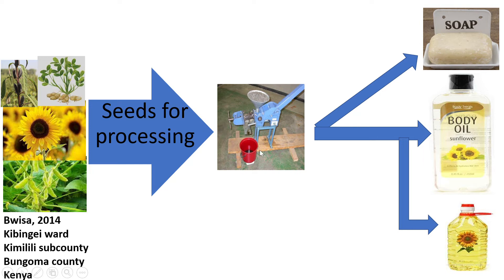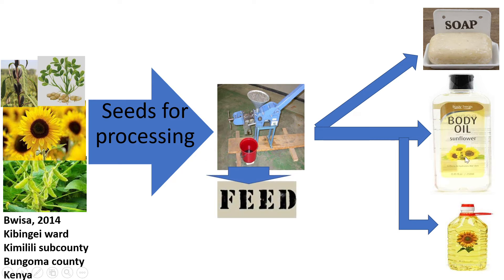When I processed the seeds, I got oil. Some of that oil went on to make soap — bar soap. Some of the oil was used for food. I did not make any body oil, but I am told sunflower can still produce body oils. The cake that remained from pressing sunflower I made into feed — animal feed, poultry feed, fish feed.